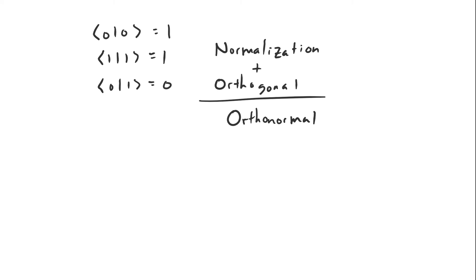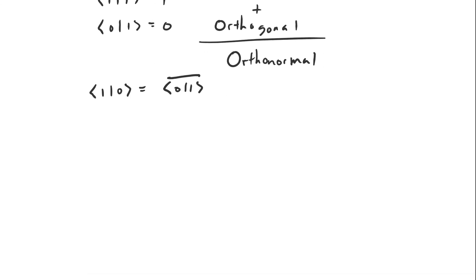We know the inner product of |0⟩ and |1⟩ by definition, and it allows us to figure out the inner product of |1⟩ and |0⟩. The inner product of |1⟩ and |0⟩ is just the complex conjugate of the inner product of |0⟩ and |1⟩ by conjugate symmetry. And because the inner product of |0⟩ and |1⟩ is a real number, its complex conjugate is itself — so the inner product of |1⟩ and |0⟩ is also zero.